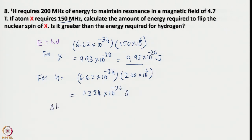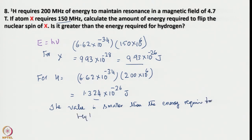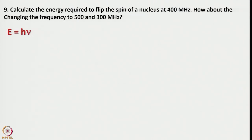The value for X is smaller than for hydrogen. You should be able to compare the values. Now let us look into one more example: calculate the energy required to flip the spin of a nucleus at 400 megahertz. How does it change if you change the frequency to 500 or 300 megahertz? You should calculate the energy required to perform the spin transition at 400 megahertz, and then see whether the energy decreases or increases at 500 or 300 megahertz.